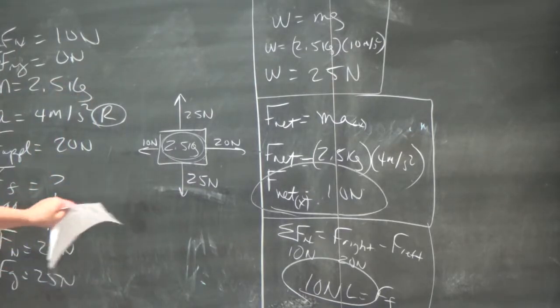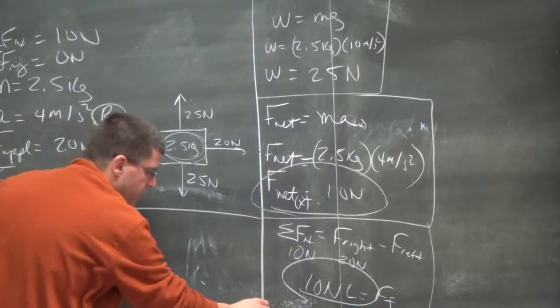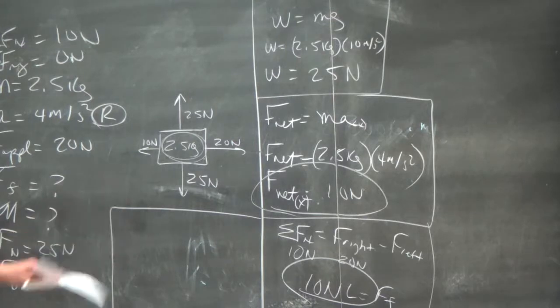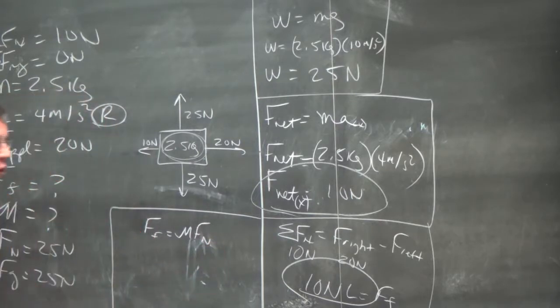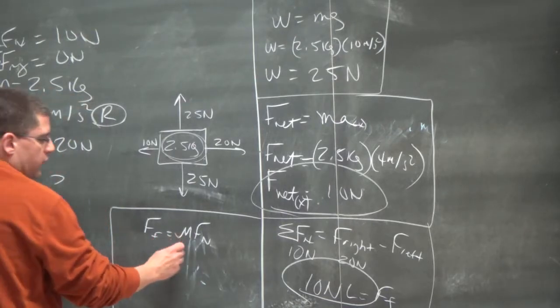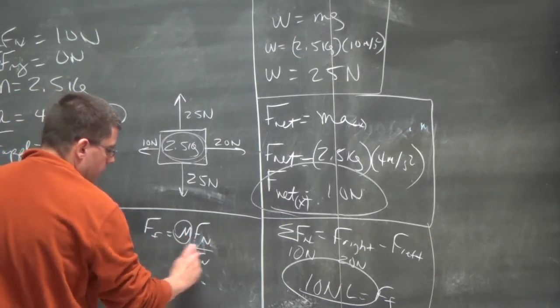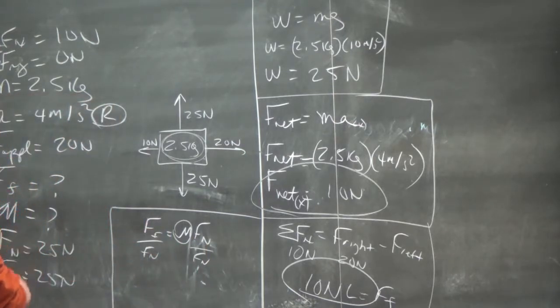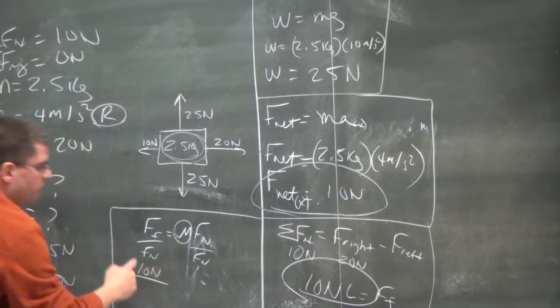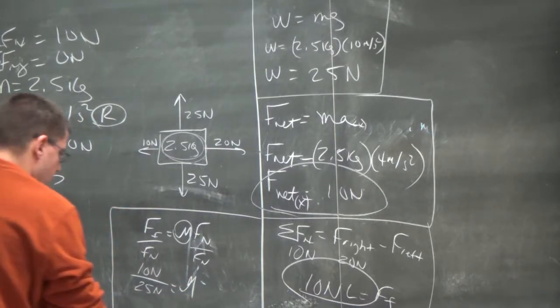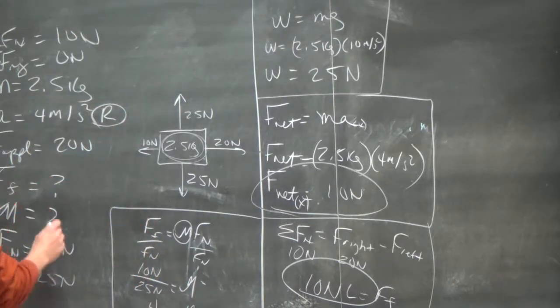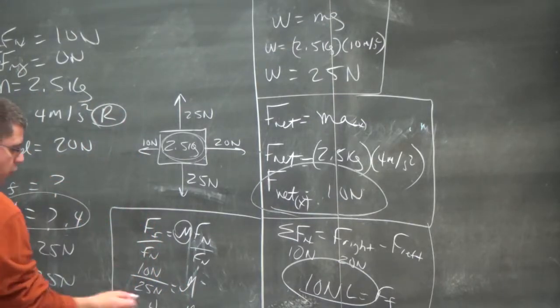And now we are ready to find mu. So what's the coefficient? In this case of kinetic friction in this problem. So now we're going to use our next formula you should already know. We need to know that the force of friction equals mu times the normal force. In this case, we're talking about the coefficient of kinetic friction. So now to solve for mu, we divide on both sides by normal force. So if we plug it in, the force of friction is going to be 10 newtons over the normal force of 25 newtons equals mu. And when you take 10 divided by 25, looks like we are getting 0.4 equals mu. So 0.4 is mu, and we know the units cancel out.